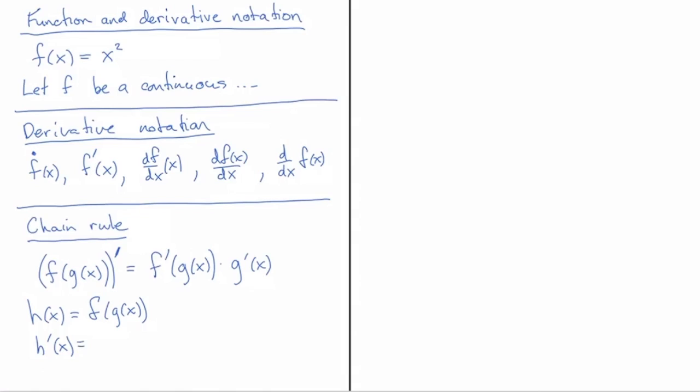And so that tells us that we do a chain rule because it's a composition and we get f'(g(x)) times g'(x). Okay so that is the way I would prefer to see it written.